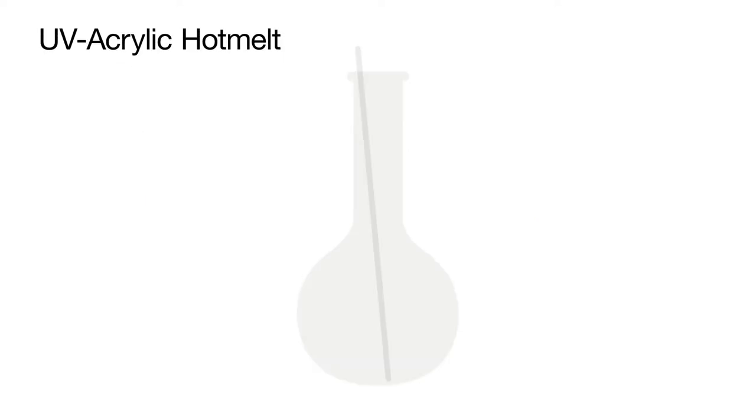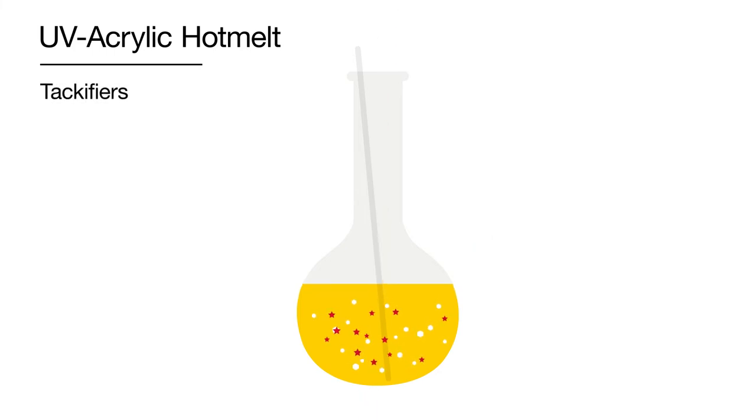Now we'll look at UV acrylic hot melt adhesives. Production starts with UV curable polymers, large molecules that can react to UV light. These are first heated. We then add tackifiers to increase the stickiness of the hot melt adhesive. As an optional final step, we can add plasticizers to help increase adhesive smoothness, for example, in soft re-closure packaging for wipes.